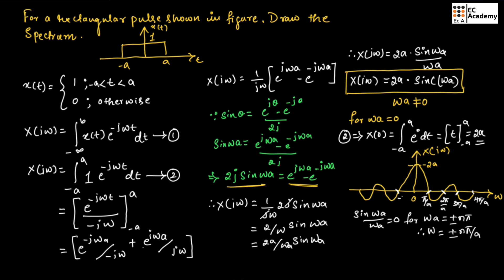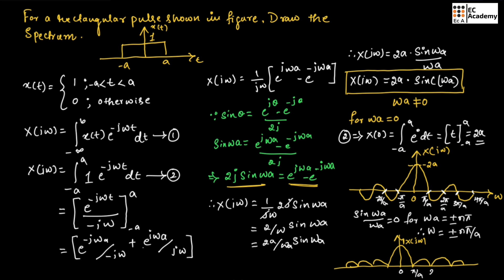We can also plot the magnitude of X(jω). Since it is the magnitude, the negative half of the waveform is written towards the positive half of the graph. The same zero crossing values apply: 0, π/A, 2π/A on the right side, and minus π/A, minus 2π/A on the left side. This completes the problem on the rectangular pulse. Hope you have understood the topic. Thank you.